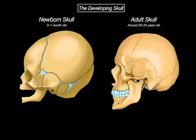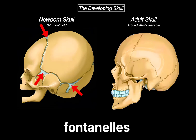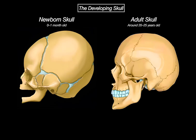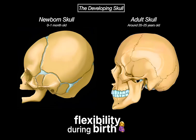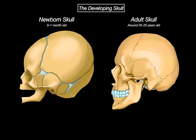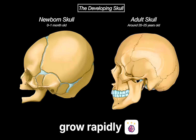At birth, the bones of the skull are not fully fused. Instead, they are connected by soft connective tissue forming what we call fontanelles. These allow for flexibility during birth, and also leave space for the brain to grow rapidly in the first months of life.